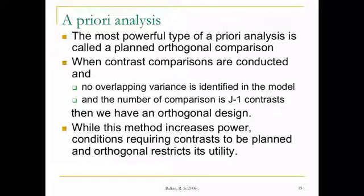The most powerful type of a priori analysis is called a planned orthogonal comparison. And the advantages of the planned orthogonal comparison is that there's no overlapping variance. And the number of comparisons is the number of groups minus one. So this gives us what's called an orthogonal design. It increases statistical power and requires that we think ahead and plan our contrasts ahead.